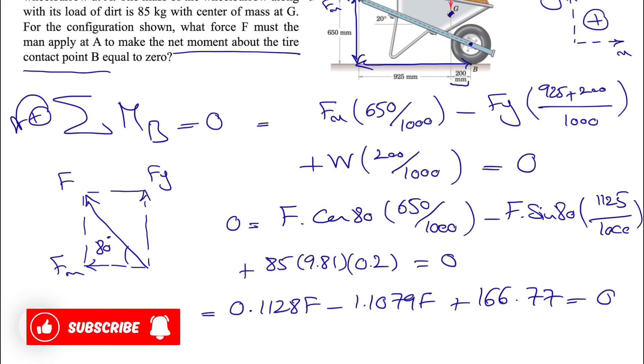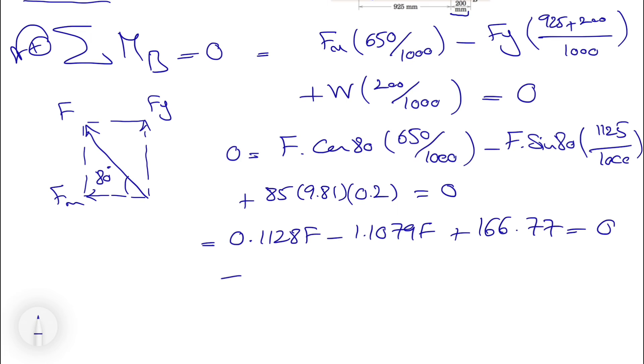0.1128F minus 1.1079F, and the last one will be 166.77 equals zero. From here we can find F, which is what the question is asking.